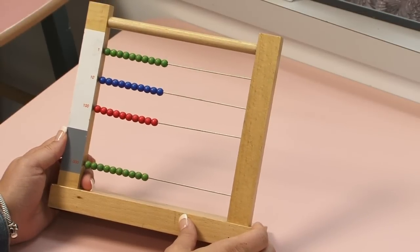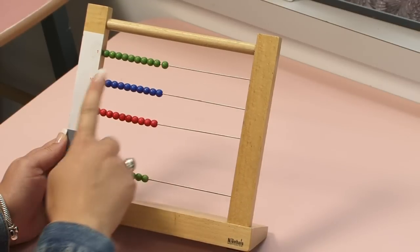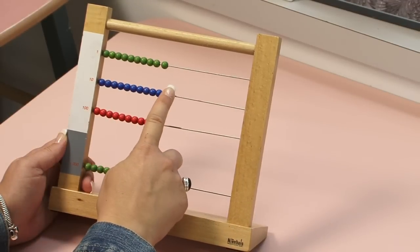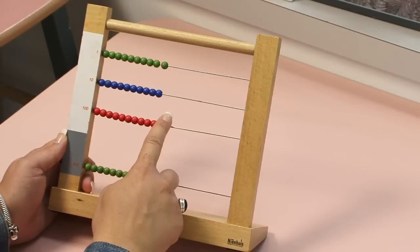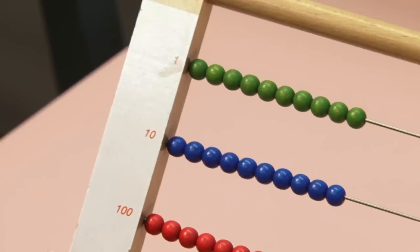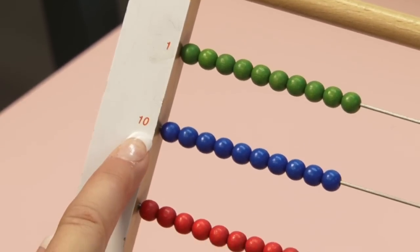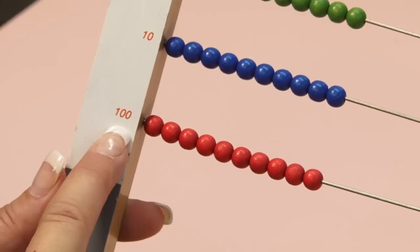Let's look again at the colors too. The ones are green, the tens are blue, the hundreds are red, and the thousands are green. It reminds me of the stamp game that we have been practicing. The same colors and the same numbers for place value.